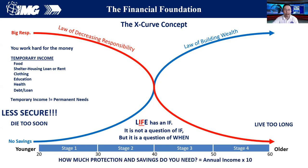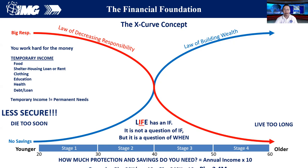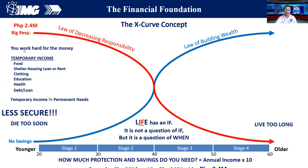Since it is very less secure at this point, how much protection and savings do we need? We have a basic formula of annual income times 10. Take note, this is not yet subject to inflation — we are just estimating how much protection you need to cover your big responsibilities if you die too soon. Example: if you are earning $20,000 a month, multiply by 12 months — that is $240,000 a year. Multiply it by 10, you will have $2.4 million. So that $2.4 million becomes your big responsibility, and at this point we don't have any savings.